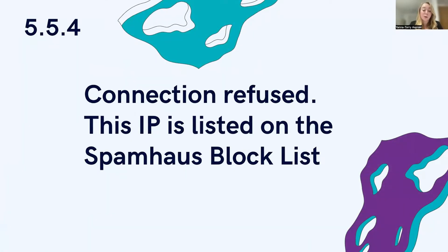This is a permanent failure — if you don't fix your issue and you're listed on a Spamhaus blocklist, resending messages again and again will not get emails into the inbox. Changing IPs is not going to solve the problem long-term; the blocklists follow you. If your IP has a problem, your sender domain reputation will also have a problem. This is a very clear indicator that you need to fix something.